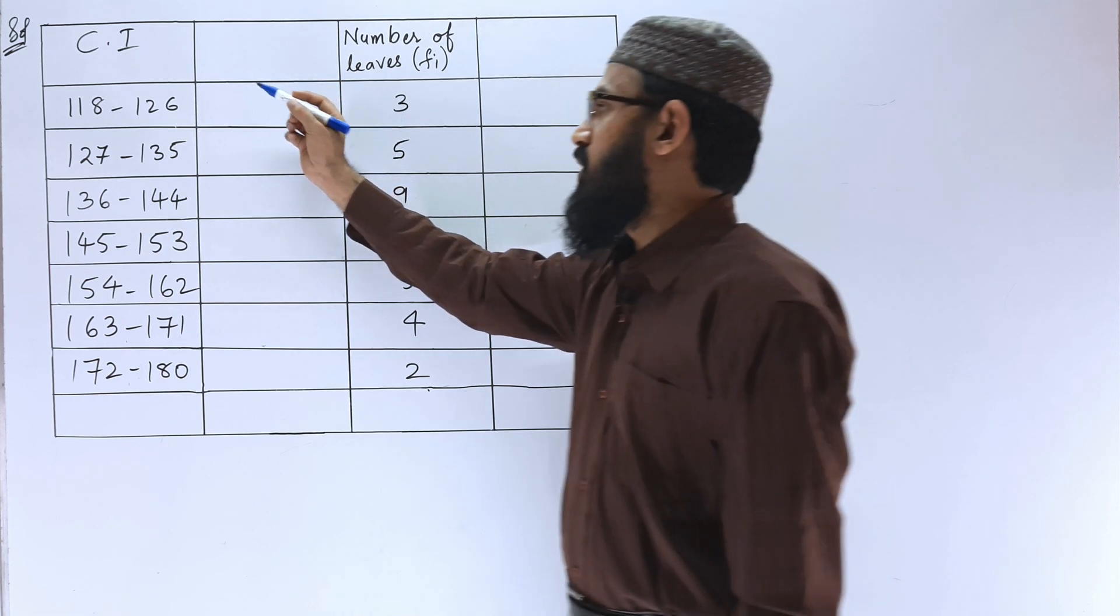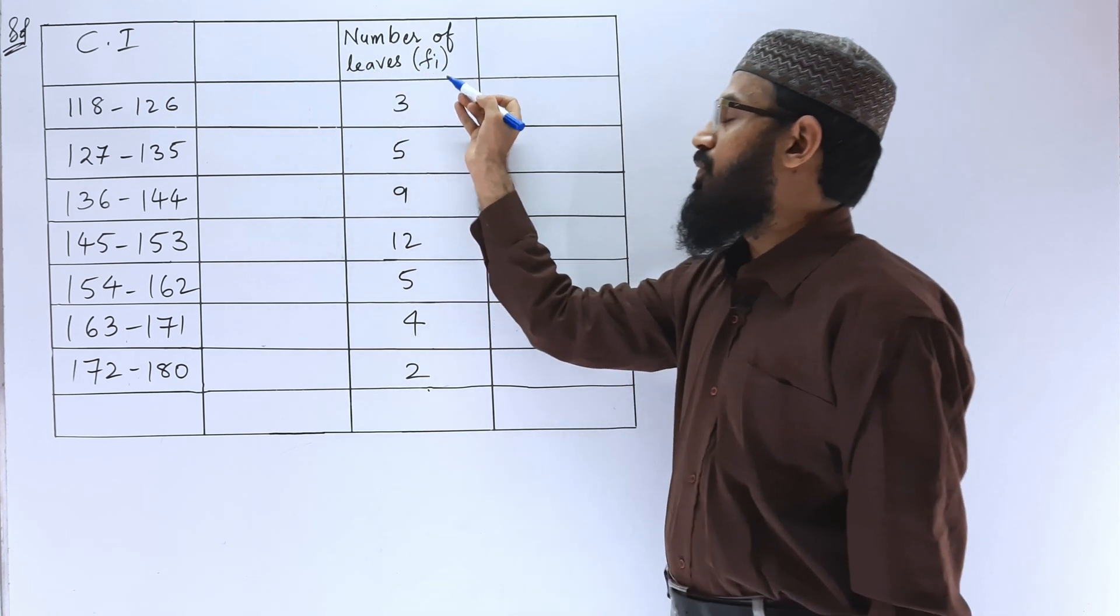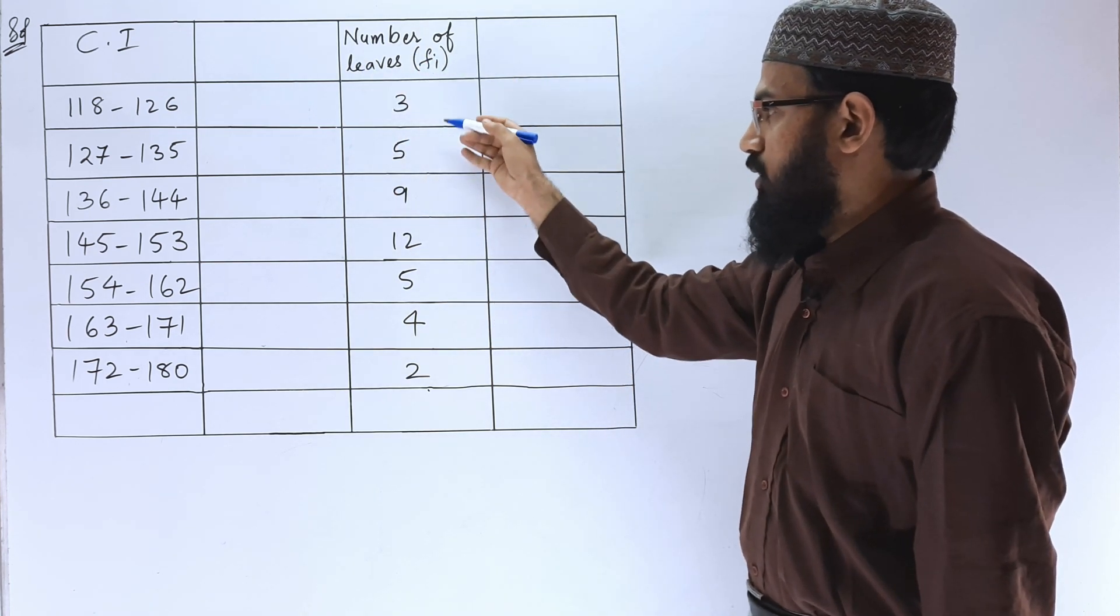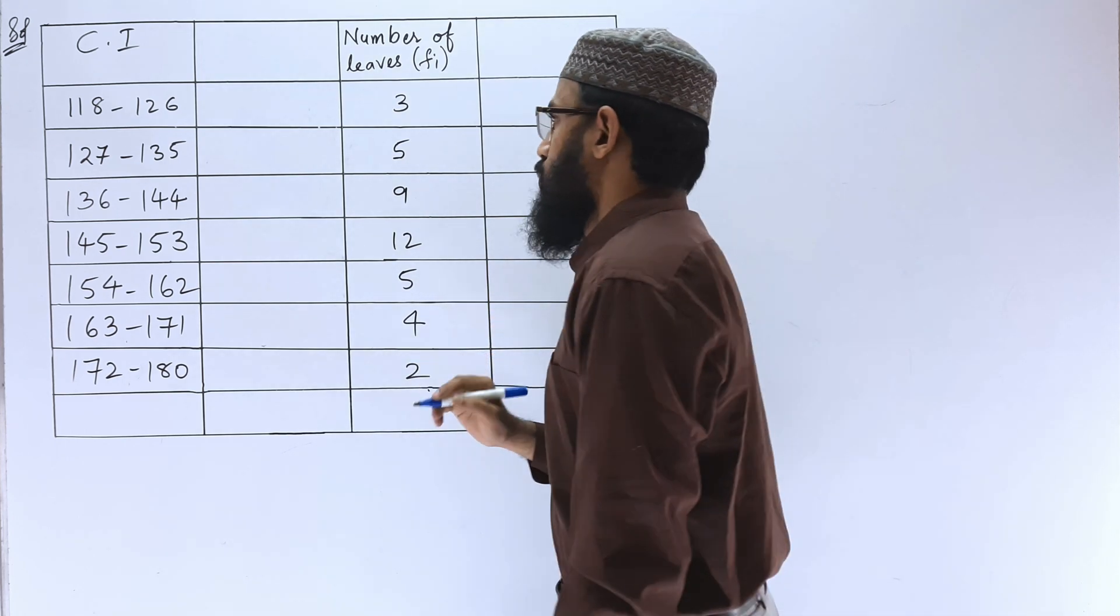We have written the given information like class interval 118 to 126 and number of leaves frequency like 3, 5, 9, 12, 5, 4, 2. Now let us solve this.